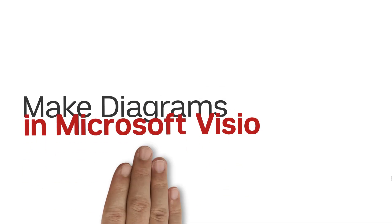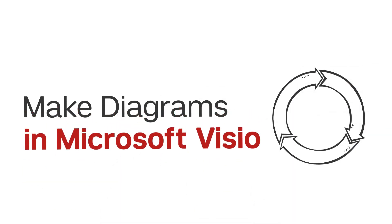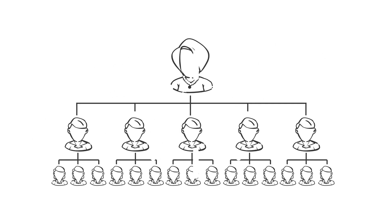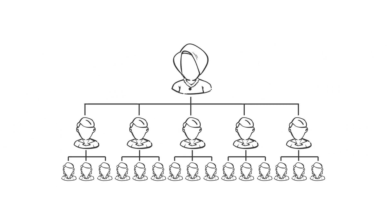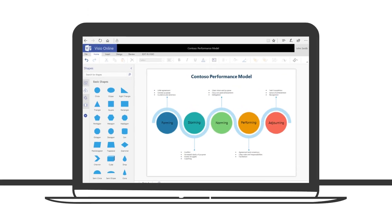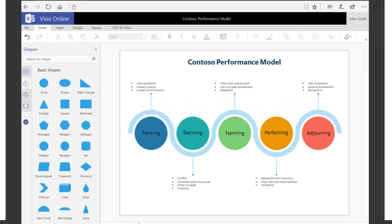Just head to your Microsoft Office 365 account and look for Visio. Visio is an application that lets you interpret text and numbers into easy-to-understand graphics. With Visio's built-in templates and shapes, you can quickly create flowcharts and organizational charts, infographic timelines, and other helpful diagrams.